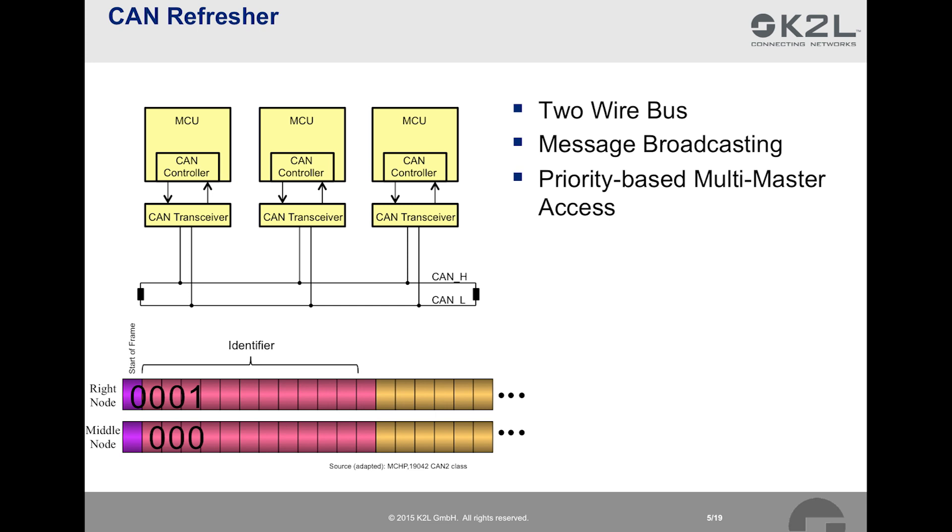Then, both nodes send the most significant bit of the identifier at the same time. The right node sends a 0, it also reads back the state of the bus, which is a logical 0. The middle node also sends a 0, and likewise reads back a 0. Then, both nodes send again a 0 for the second bit of the identifier, and both nodes read back a 0. Now, the third bit is transmitted. The right node sends a 1, and the middle node sends a 0. Because a 0 is dominant in CAN, as discussed before, both nodes read back a 0. Now, the right node realizes that it has lost this arbitration round since it was sending a 1 and is reading back a 0. The right node then stops sending, and in the following just listens to what is going on on the bus. It will try to get the bus for message transmission after the current frame.